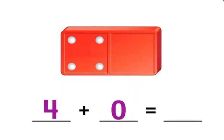Let's write the number zero. Now let's add to find the sum. Four plus zero equals four.